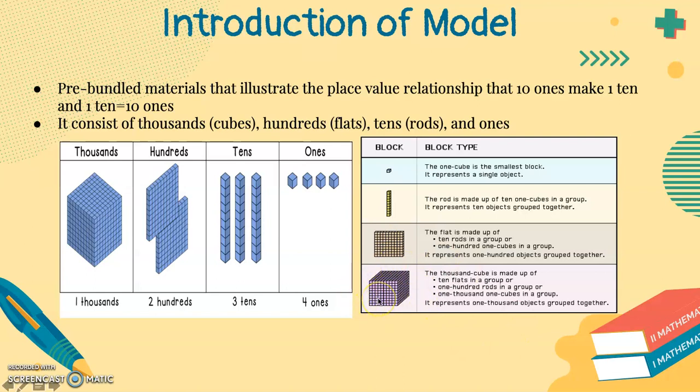The thousands cube is made up of 10 flats in a group or 100 rods in a group or 1000 one cubes in a group. It represents 1000 objects grouped together.